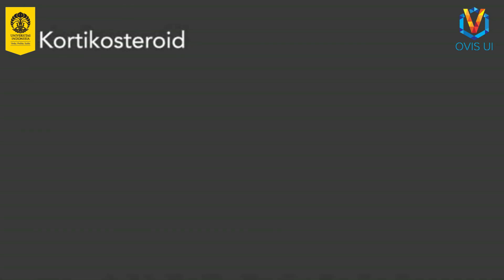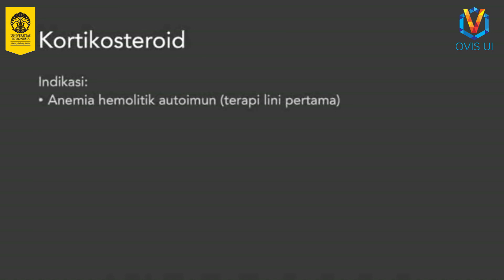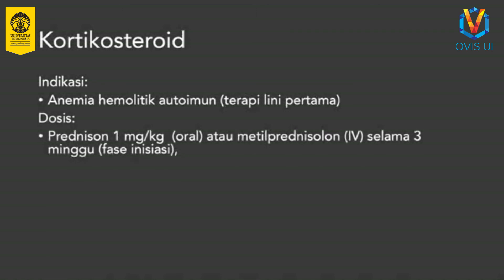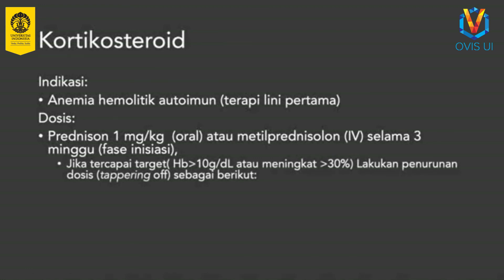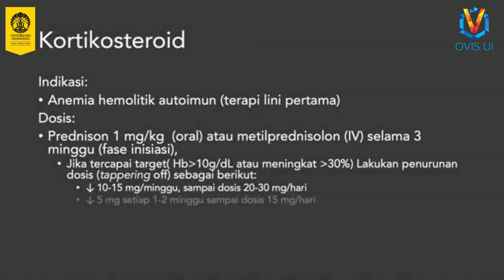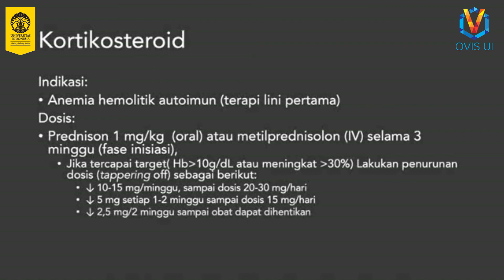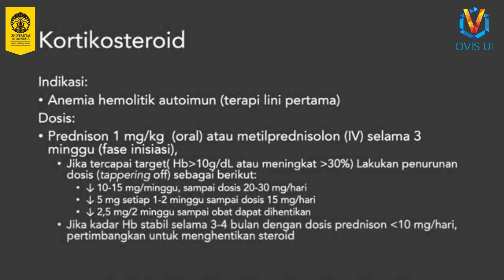Kortikosteroid merupakan terapi lini pertama pada anemia hemolitik autoimun. Dosis awal terapi kortikosteroid adalah 1 mg per kg berat badan prednisol selama 3 minggu. Jika setelah 3 minggu target terapi tercapai yaitu Hb lebih dari 10 gram per desiliter atau Hb meningkat lebih dari 30%, dosis dapat dikurangi menjadi 20-30 mg per hari dengan penurunan dosis sebanyak 10-15 mg per minggu. Dosis dapat diturunkan lagi sebanyak 5 mg setiap 1-2 minggu sampai mencapai dosis 15 mg per hari, yang kemudian dapat dilanjutkan dengan penurunan dosis 2,5 mg per 2 minggu sampai obat dapat dihentikan. Jika selama 3-4 bulan kadar Hb stabil dengan dosis steroid rendah kurang dari 10 mg prednisol, penghentian steroid dapat dipertimbangkan.